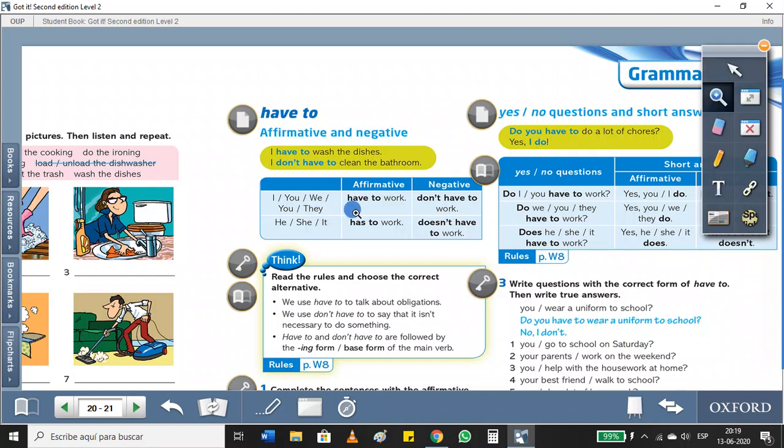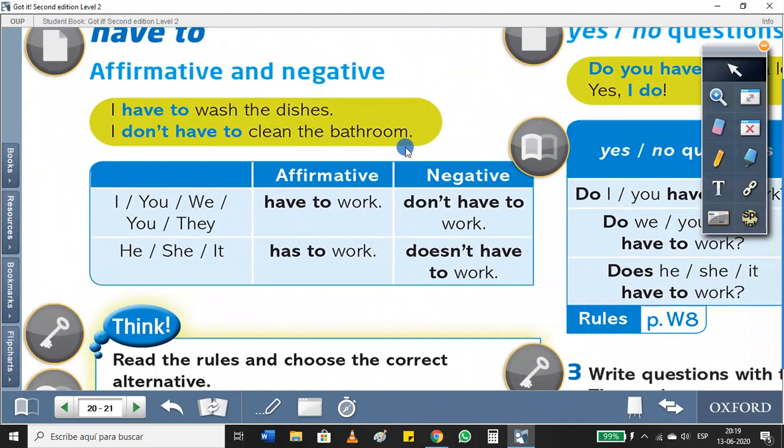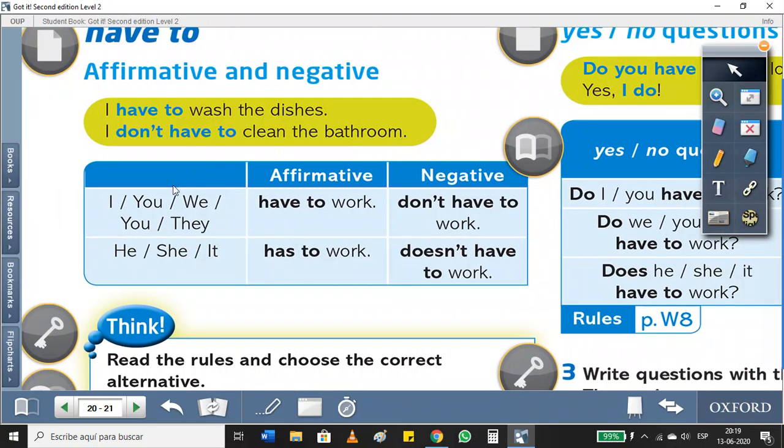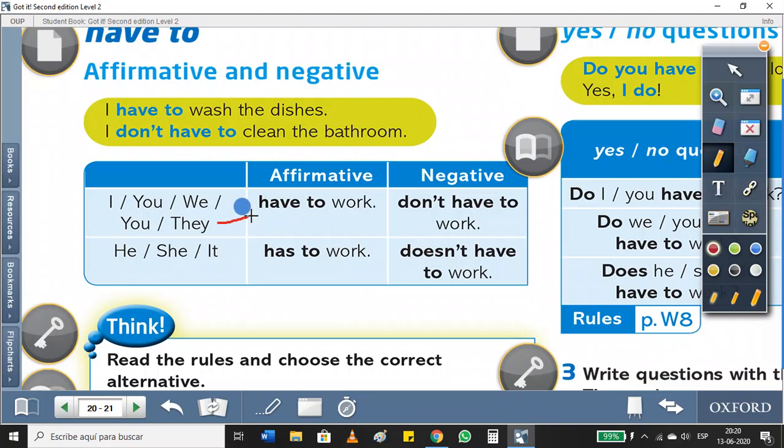Look at here. First of all, we need a subject. Nuestro sujeto para usar 'have to' va a ser I, you, we, you, and they. This 'you' means tú, and this 'you' means ustedes. For that reason we have you, you. So I, you, we, you, and they go with 'have to'. Con estos voy a usar 'have to'.